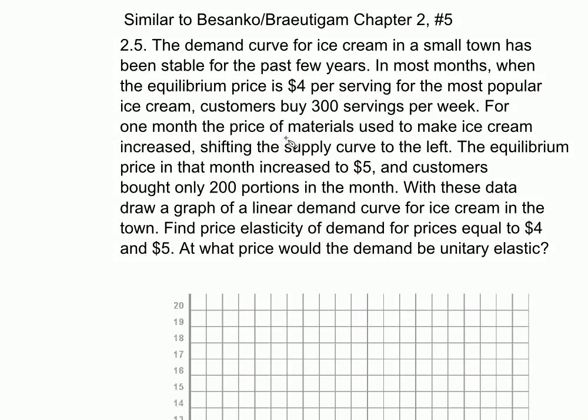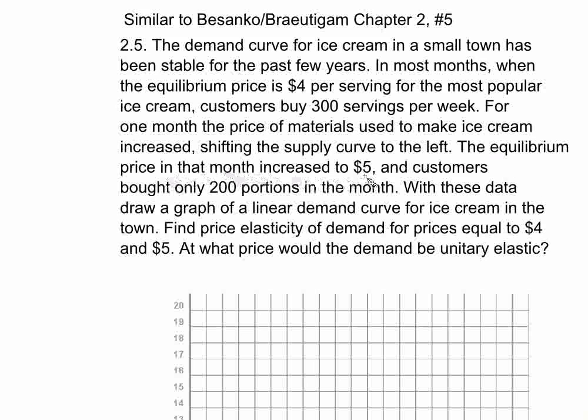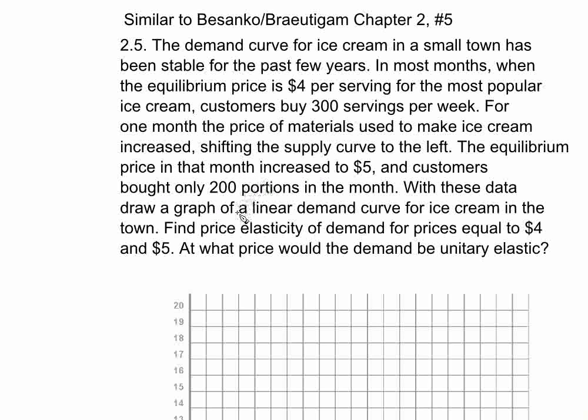But for one month, the price of materials used to make ice cream increased, which shifted the supply curve to the left. Now what a supply curve shift does is let you find another point on a demand curve. So the equilibrium price in that month increased to $5, and we saw that customers bought 200 servings of ice cream that month.